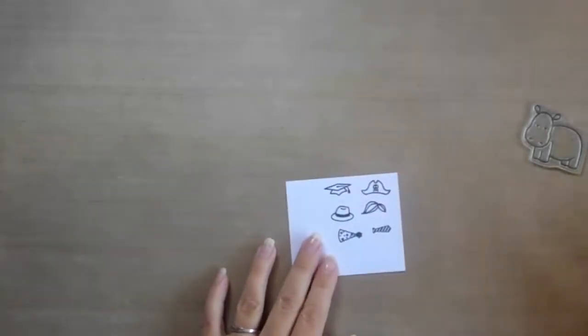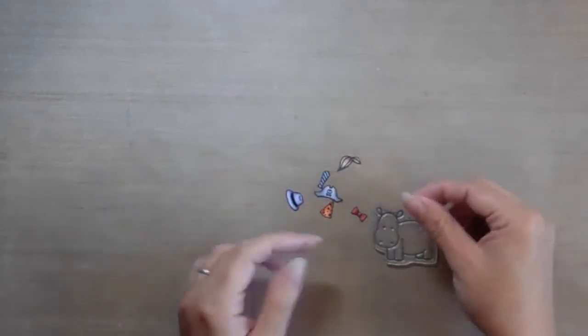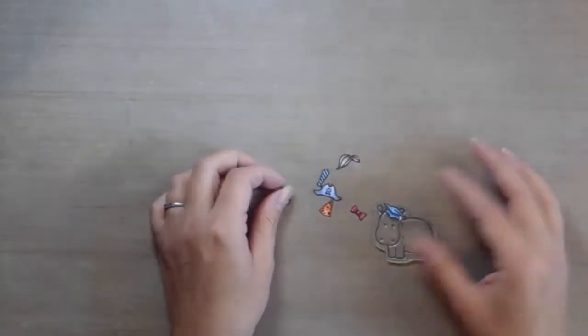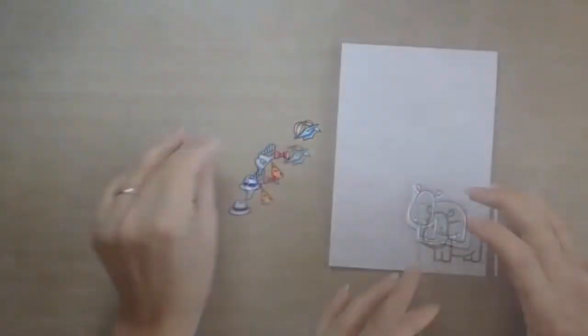I then go ahead and color in all of the accessories and fussy cut them out. Doing this way, it means that I can play around with the image with different images on it before I settle on how I'm going to have it. It leaves more room for playing. So stamp your image.